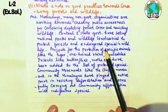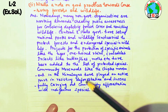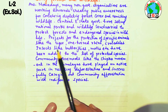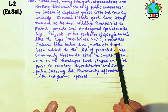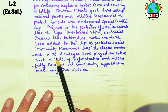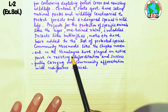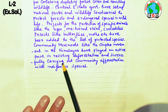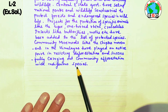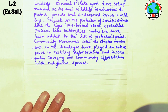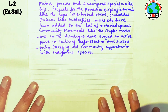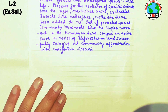Many species that are on the verge of extinction need to be saved. Projects for the protection of specific animals like the tiger, crocodile, and butterfly have been launched. The Chipko Movement is a community movement that played an active role in preventing deforestation. A community afforestation program has also been carried out to plant more indigenous and local species.